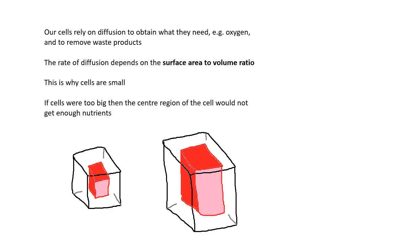Basically, stuff needs to diffuse into and out of the cell. For example, oxygen needs to diffuse into the cell. And the rate of diffusion depends on the surface area to volume ratio. If the surface area to volume ratio is big enough, then plenty of stuff will come into the cell. And this is why cells are small. Because they need this oxygen and other stuff coming in. If cells were too big, then the middle of the cell wouldn't get enough stuff. It wouldn't get enough oxygen. It wouldn't get enough nutrients. It wouldn't be able to get rid of the stuff it needs to get rid of.